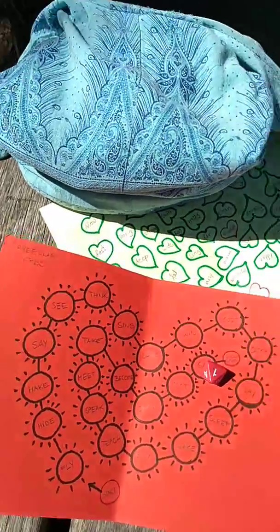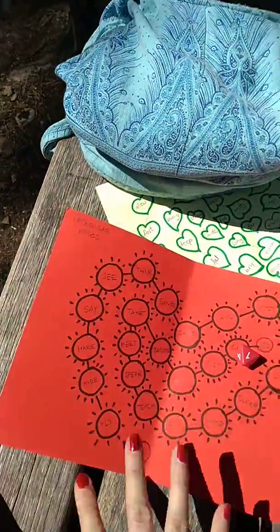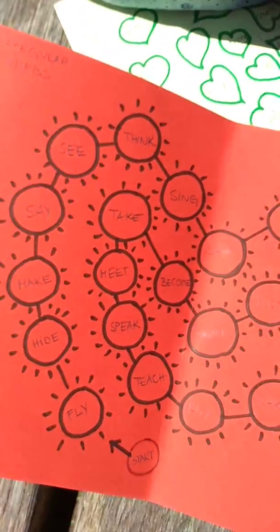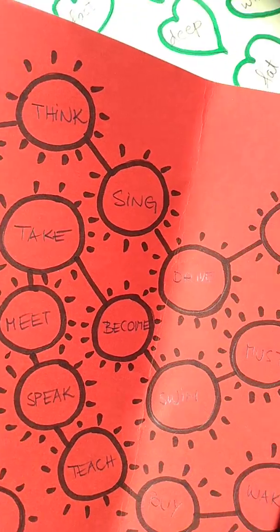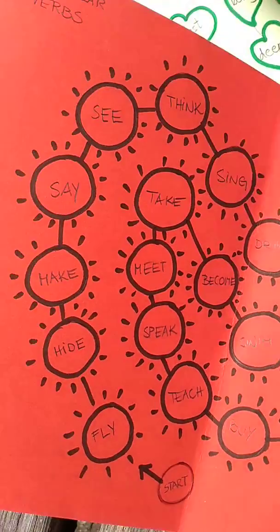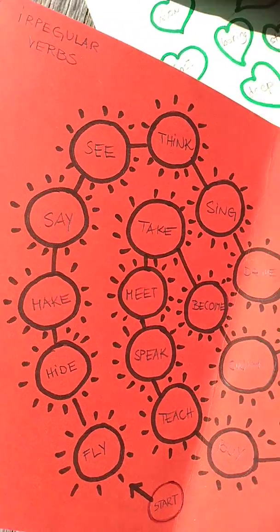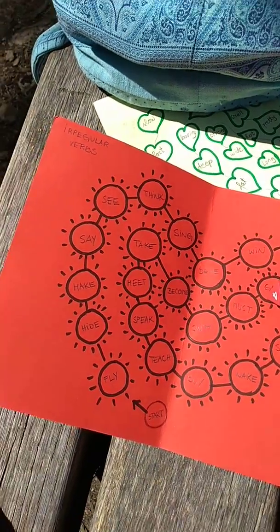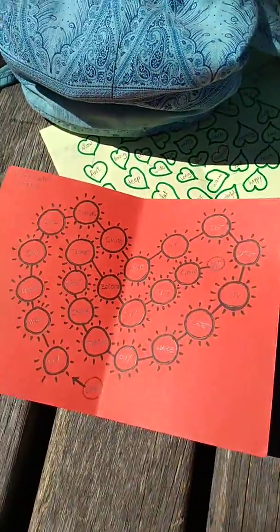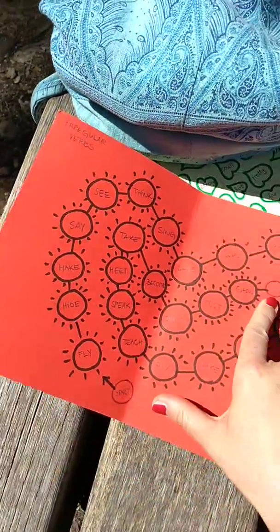Here's how you're going to play the game. This is one with irregular verbs. I have written irregular verbs in their infinitive form into these circles, suns. And you start here and you get to 'well done.'